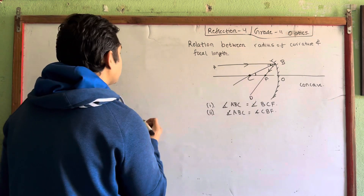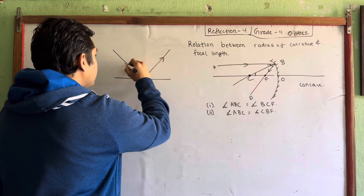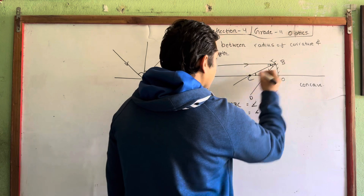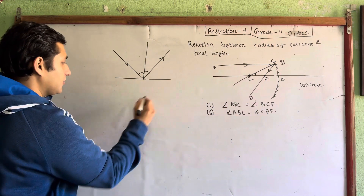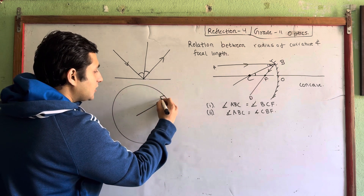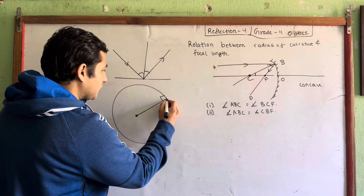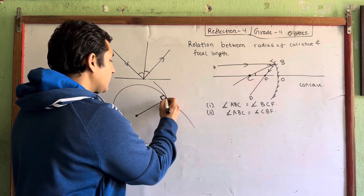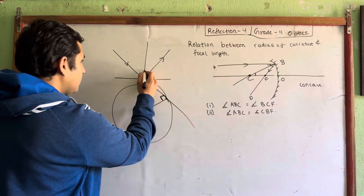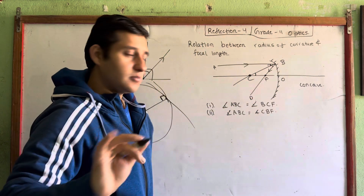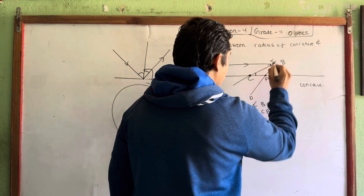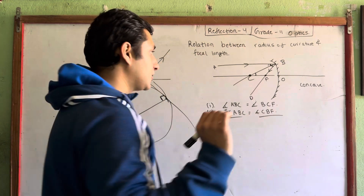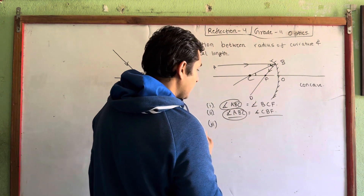This is the angle of incidence and angle of reflection of the body. The normal goes here — normal to the center of the circle, 90 degrees, the radius. This is a circle property: the tangent is 90 degrees, so BC is the normal. The angle of incidence is equal to the angle of reflection.